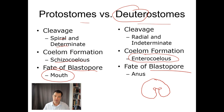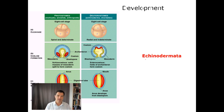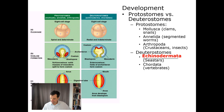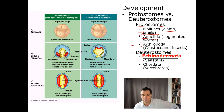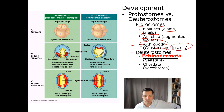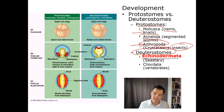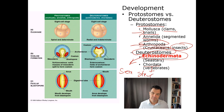Looking at the different organisms in these groups: protostome organisms include mollusks — clams, snails, squid, octopods — annelid worms like earthworms, and arthropods — the biggest identified group, including crustaceans and insects. Deuterostomes are fewer in number but include the Echinodermata and the Chordata. Echinoderms are things like sea stars, and we humans are in the Chordata.